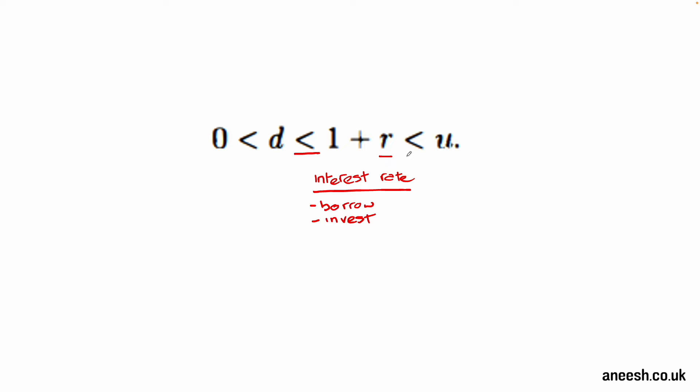R must also be less than the upward factor U, otherwise you could sell the stock and invest that money into the money market and always realize a profit at time 1 when buying the stock back. This is because the value of your cash will be greater than the possible upward factor of that stock value, so you're always going to have more money by investing it in the money market than you will from selling that stock.